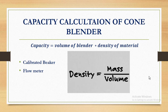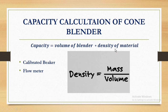First of all, we will see how we measure the capacity. This is a simple formula. The formula is basically: if we want to get capacity in kg, we will use the volume of blender multiplied by the density of materials. The capacity in kg requires both the volume of blender and the density of materials.